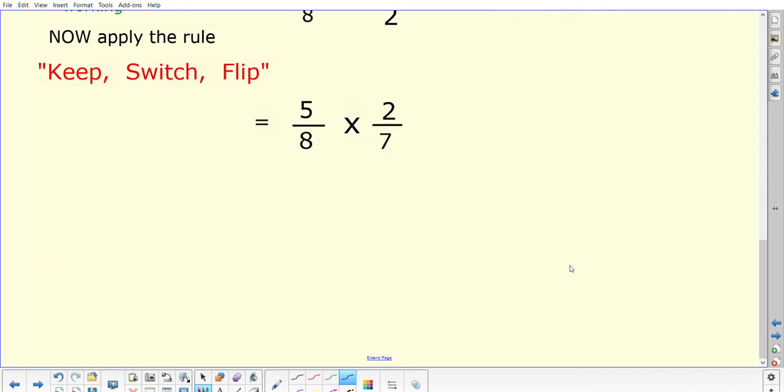And we will see here that we can do a little bit of cancelling between the 2 and the 8. So 2 into 2 is 1, 2 into 8 is 4. There is no other cancelling to do there, so we're left with 5 times 1 on the top which is 5, 4 times 7 on the bottom would be 28, and that would be our final answer, 5 over 28.